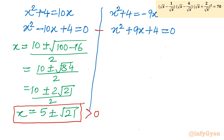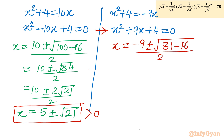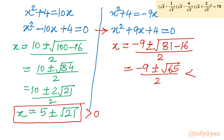For the second equation, x² + 9x + 4 = 0. Applying the formula: x = [−9 ± √(81 − 16)] / 2 = [−9 ± √65] / 2. Since √65 ≈ 8.1, with the plus sign we get −9 + 8.1 which is negative, and with the minus sign −9 − 8.1 which is also negative. Both values are negative, so this solution is rejected.